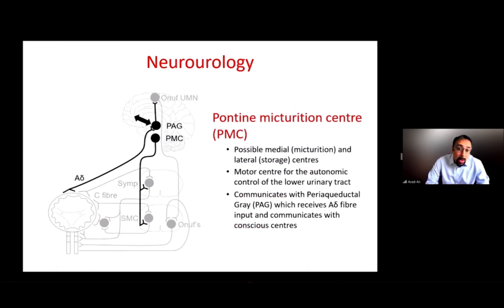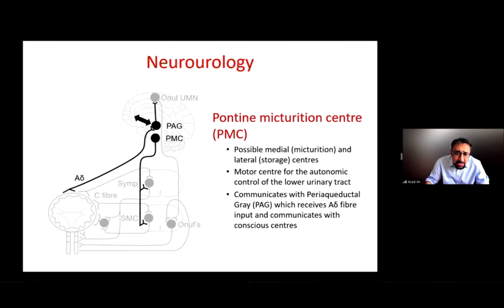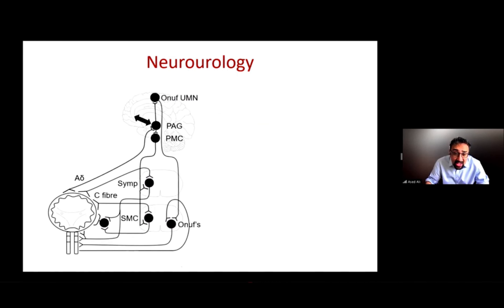The next really important part from a neurological point of view is the pontine micturition center, which has a medial micturition center and a lateral storage center. This is the motor center for autonomic control of the lower urinary tract — where it all coordinates. It communicates with the periaqueductal gray, which receives A-delta fibers and further sensory fibers from below, and this is where all the coordination occurs.